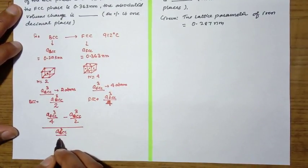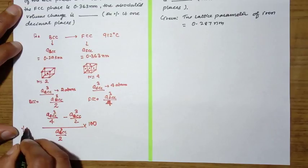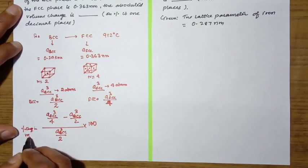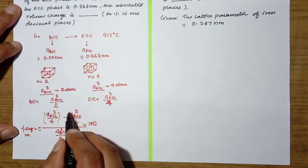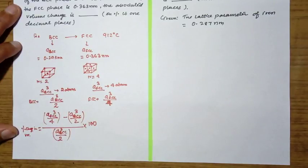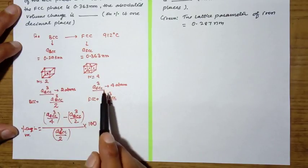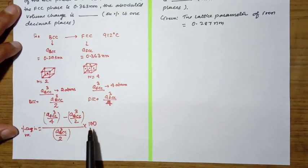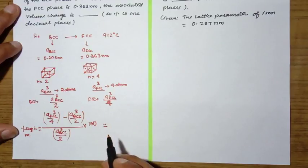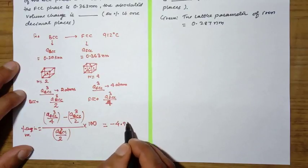The percentage change in volume comes out to minus 4.92 percent. The key thing to remember is the volume per unit atom, because the number of atoms are different in BCC and FCC — divided by 4 for FCC and divided by 2 for BCC. So the answer for this question is minus 4.92.